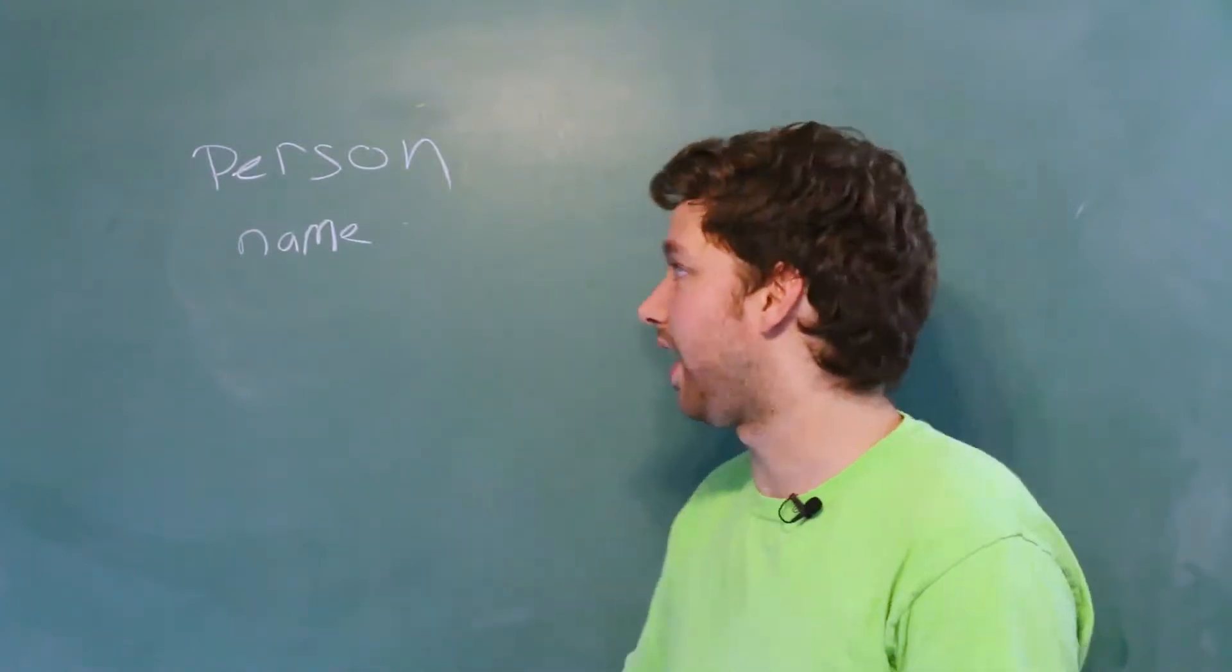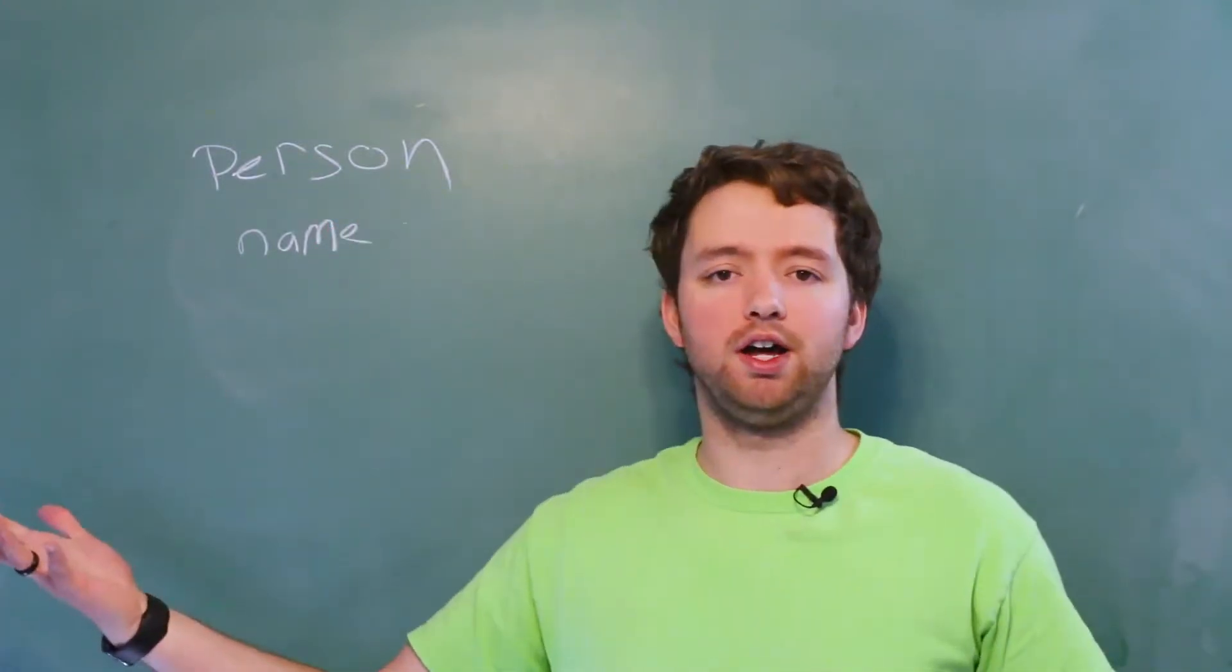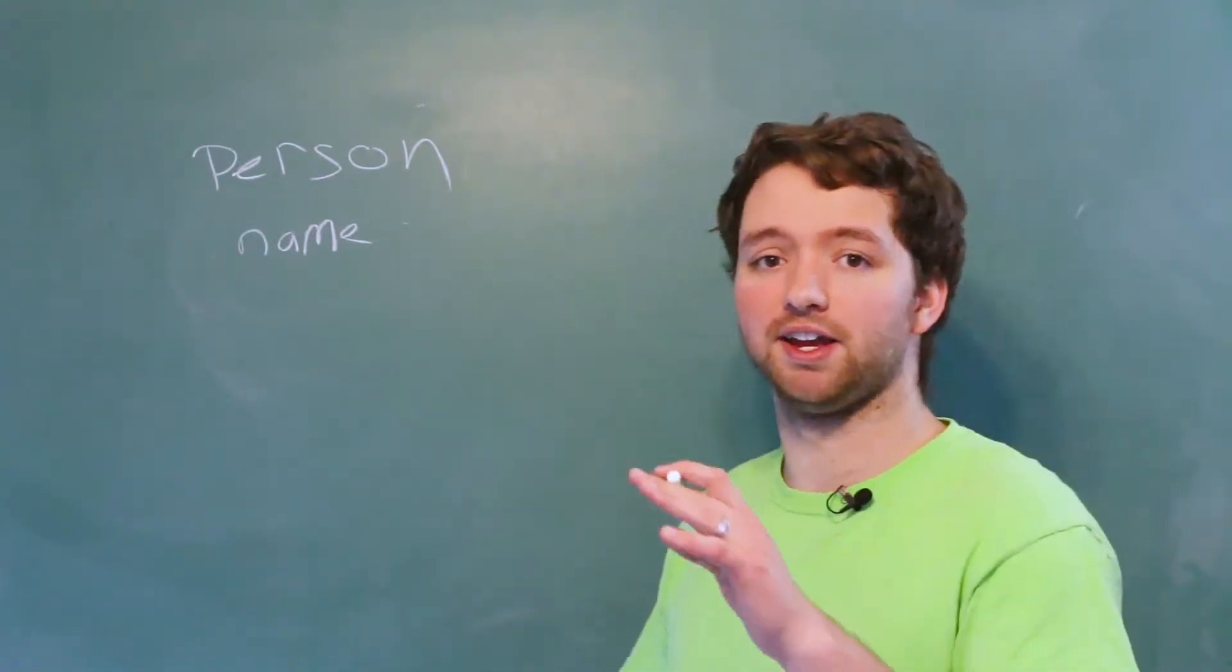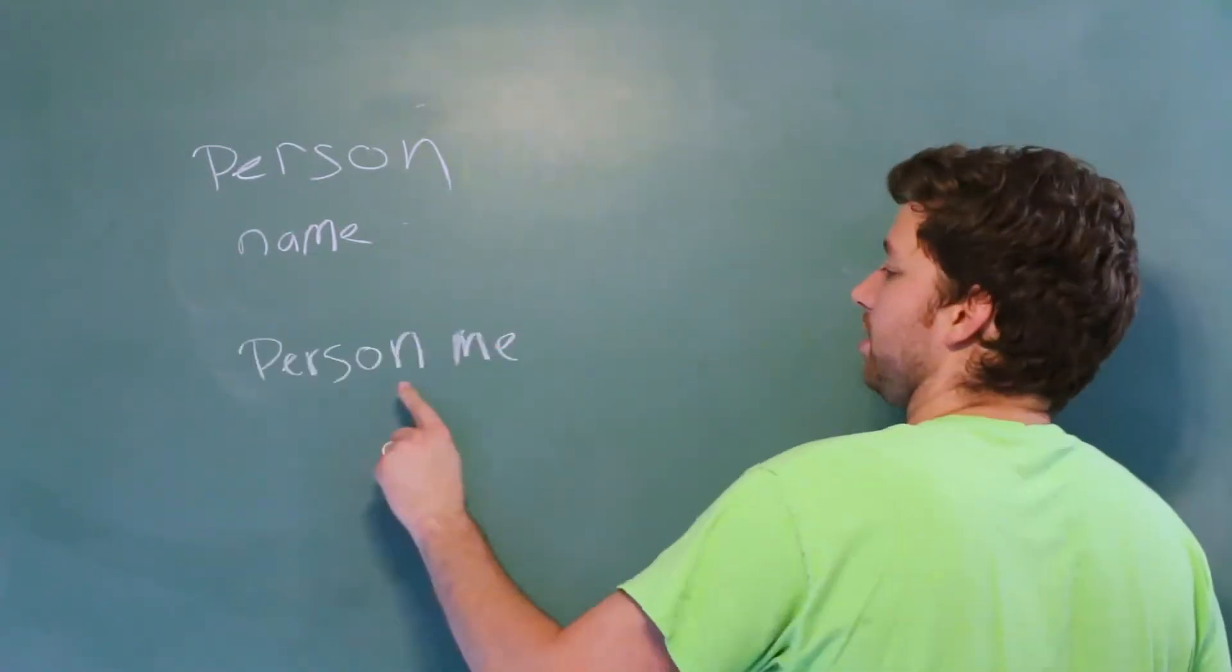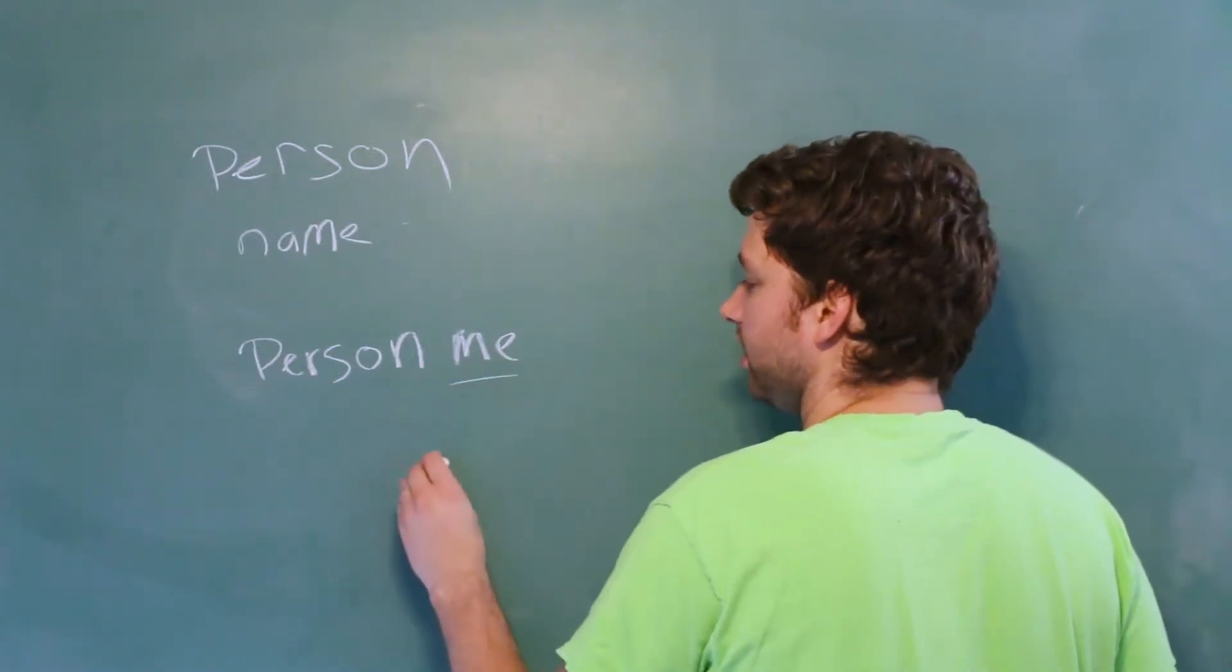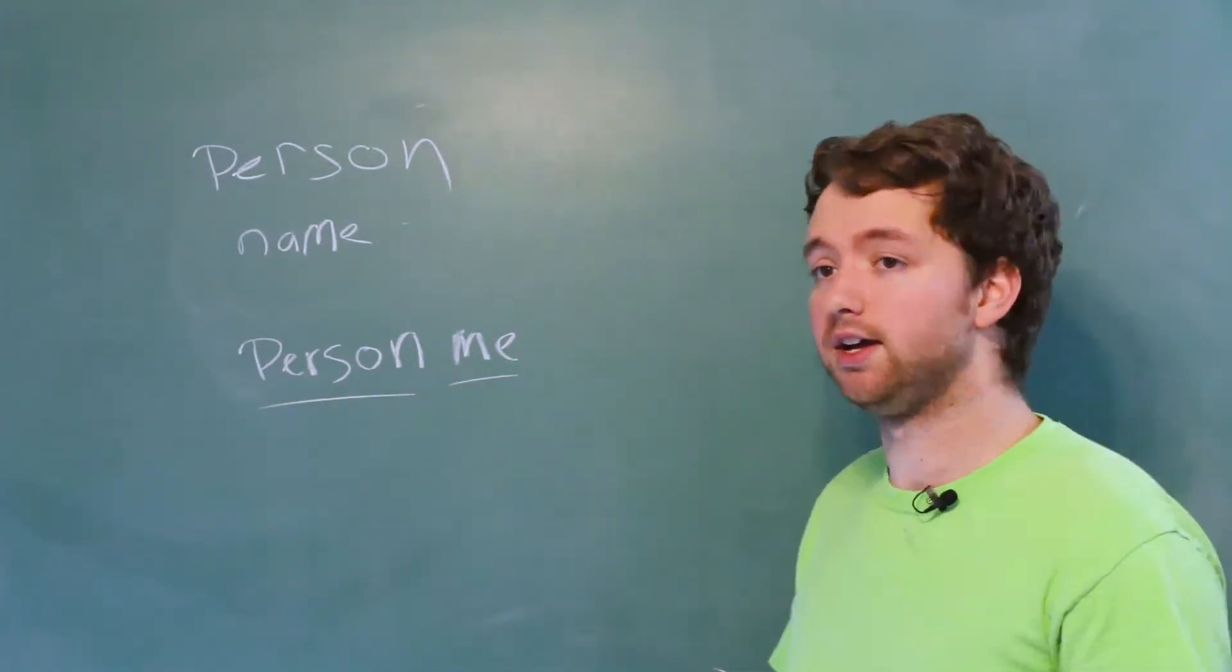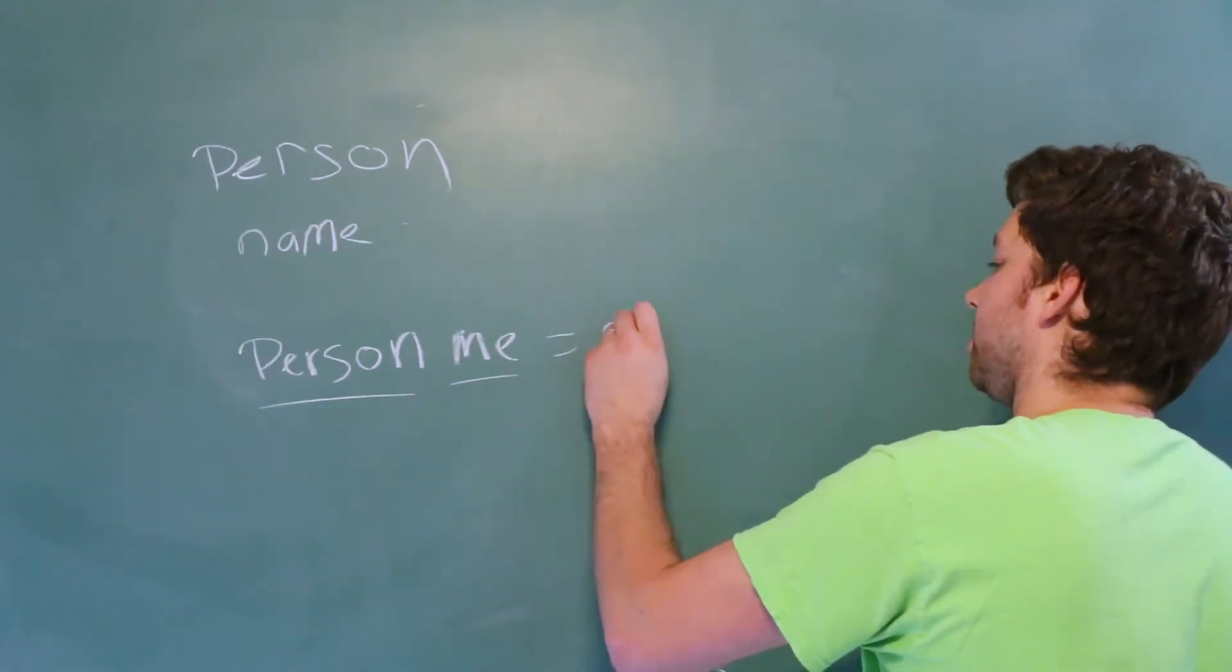So what that means is we could have a name which, you know, a name is public. You can reference a person by their name. So here's what it might look like when we create people. We might say person me. So this is the identifier. This is the type. We're creating a new type when we create a class. And then we say new person.